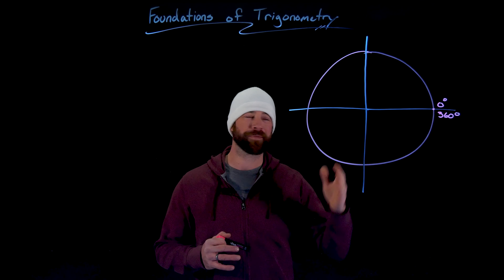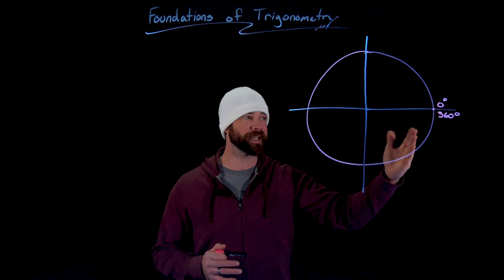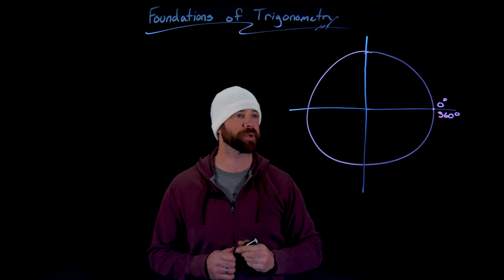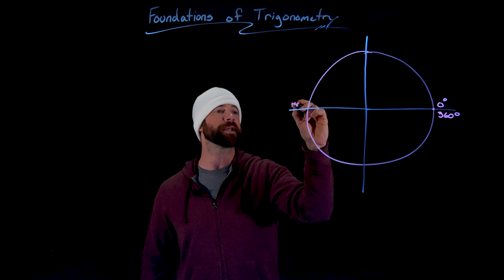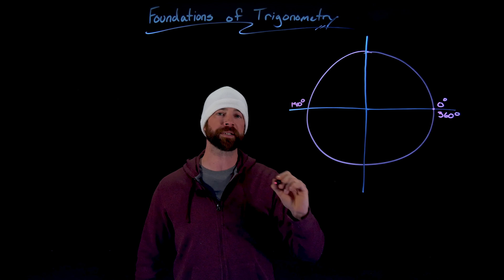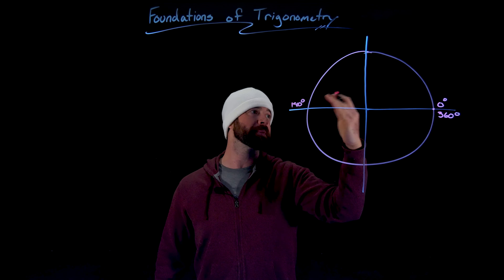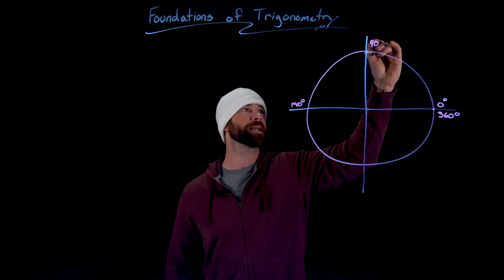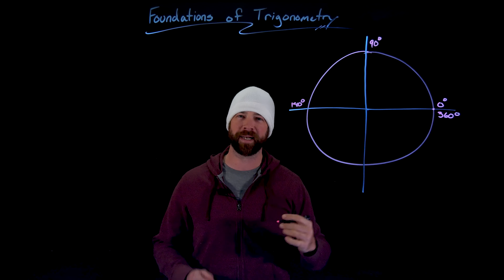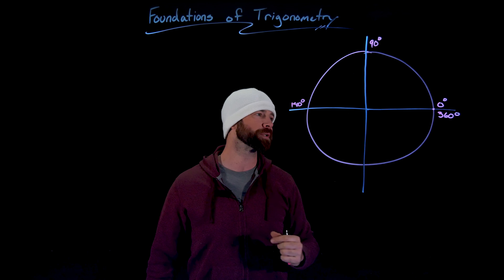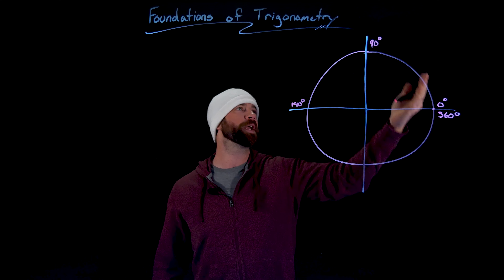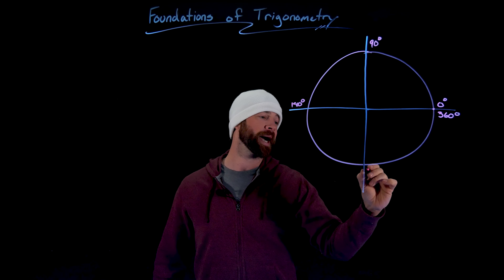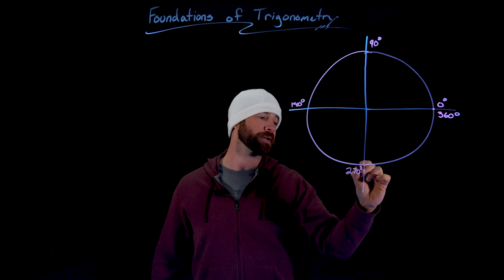If we know a full circle is 360 degrees, we know if we go half a circle we would get half of the degrees, which would be 180 degrees. If we go a quarter of the way — between zero and 180 — we would get 90 degrees. We know about 90-degree triangles, right triangles. If we went three-fourths of the way around, we would have 270 degrees.